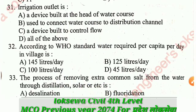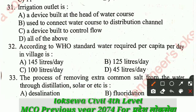Question number 31: An irrigation outlet is: A - a device built at the head of a water course, B - used to connect a water course to a distribution channel, C - a device built to control flow, D - all of the above. The correct answer for Q31 is B: used to connect the water course to the distribution channel.